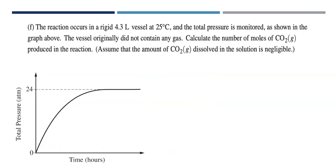The reaction occurs in a rigid 4.3 liter vessel at 25 degrees Celsius. And the total pressure is monitored as shown in the graph above. Well, I put it down below. The vessel did not originally contain any gas. Calculate the number of moles of CO2 produced in the reaction. Assume that the amount of CO2 gas dissolved in the solution is negligible. So we're assuming it's all going into the gas phase. So what's our strategy here? Well, it's the ideal gas law. PV equals nRT. We have a volume. We have a pressure. We have a temperature. We can calculate moles. Ah, but there's a twist. We need to be careful.